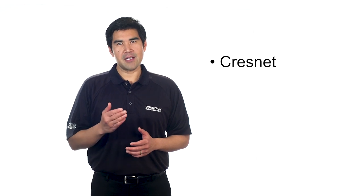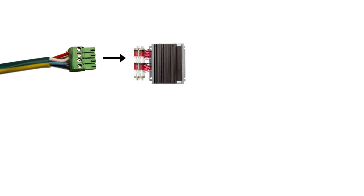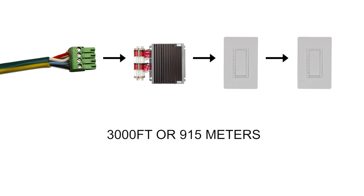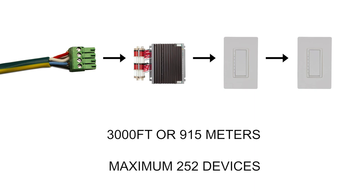Lastly, we'll look at Crestnet. Crestnet is a four-pin connection found on many Crestron devices. It is a bespoke communication network that allows multiple Crestron devices to communicate at a distance of up to 3,000 feet or 915 meters, with a maximum of 252 devices on a single connector. Crestnet is only usable with other Crestron devices. While most devices are now heading towards Ethernet, Crestnet is still used, particularly in lighting systems and keypads. Crestnet will also be discussed in more detail in another video in this class.